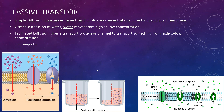Facilitated diffusion is also passive, but a little more complex — it uses a transport protein or a channel to transport something, again from high concentration to low concentration. Looking at this example, we're still going from high concentration to low concentration, but we're not going directly through the cell membrane. In this case we're going through what's called a channel protein, which is an integral protein that just has an opening that allows things to pass through. It's still going from high to low concentration — that is facilitated diffusion.